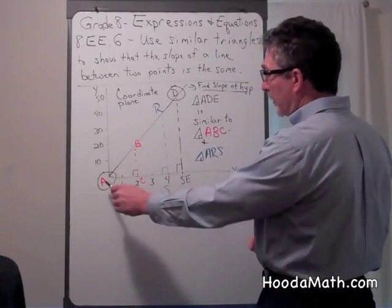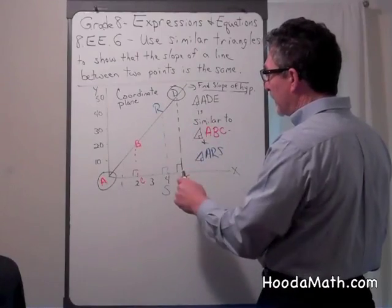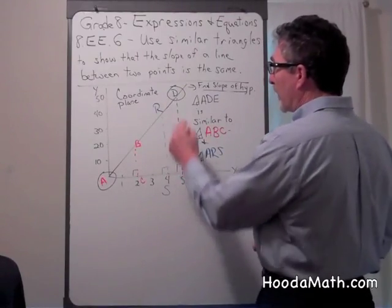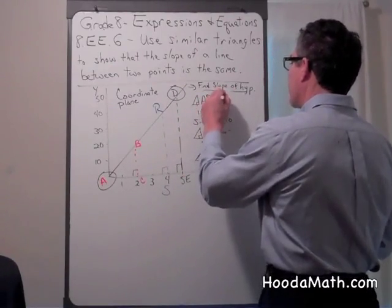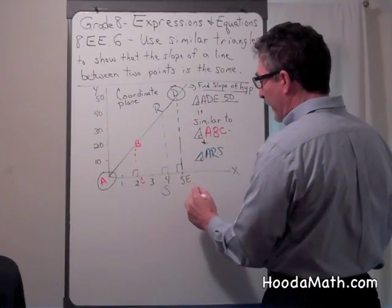The slope of triangle ADE is the change of y, which is 50, over the change of x, which is 5.